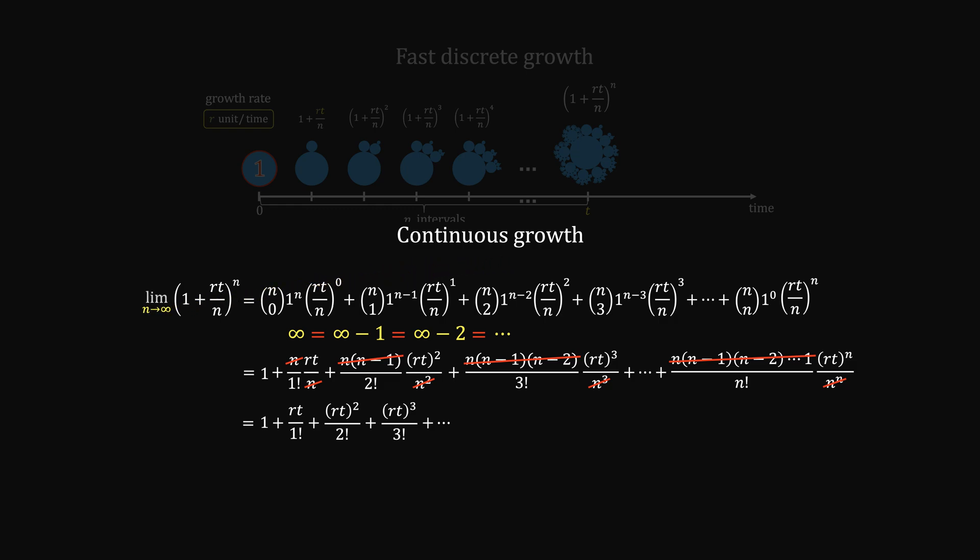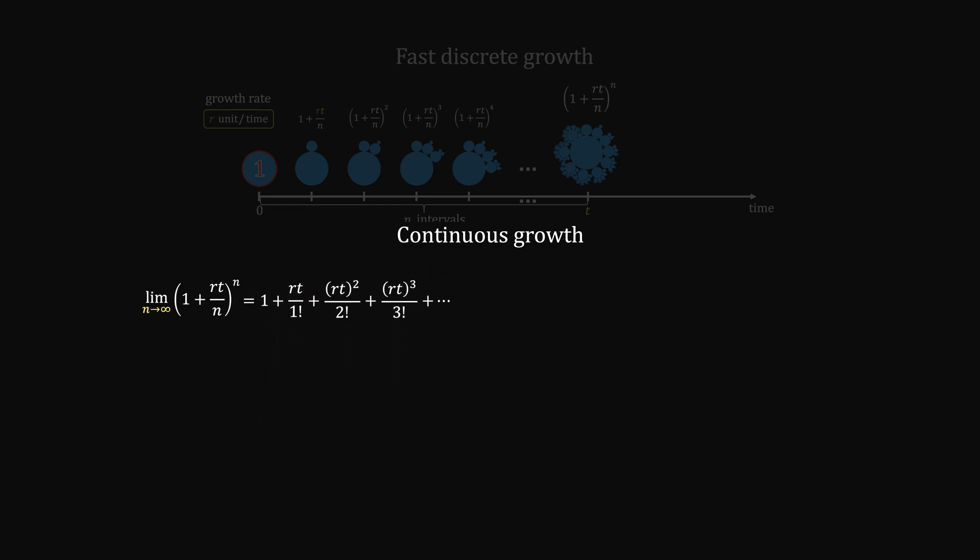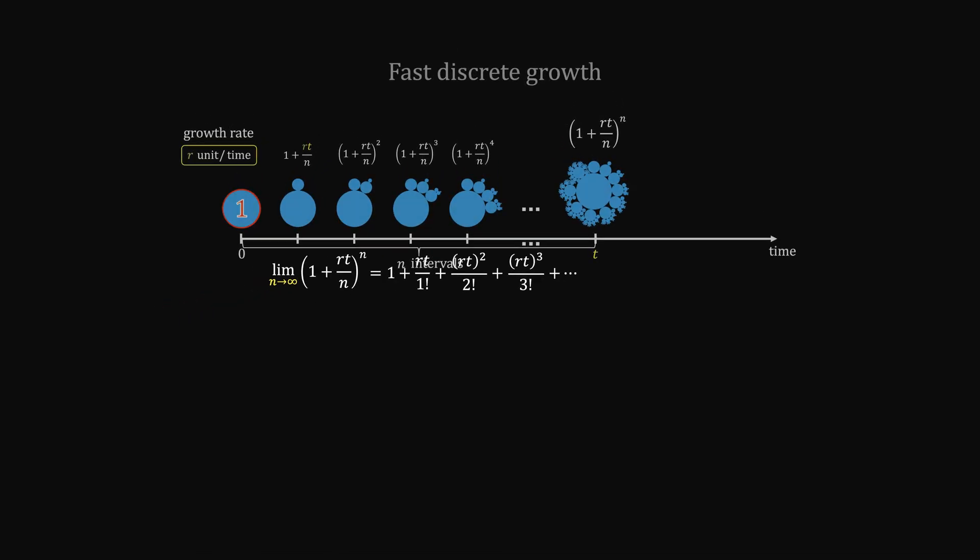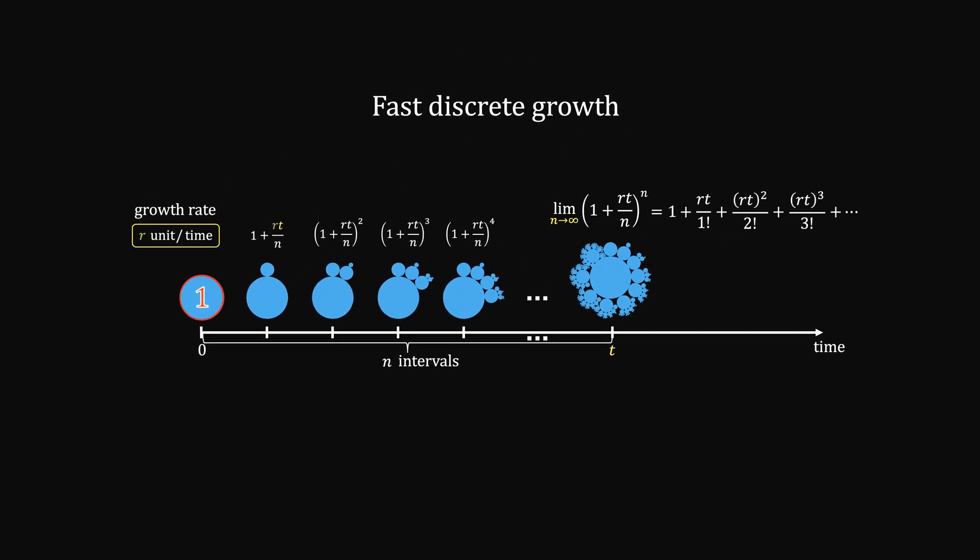This happens only when n goes to infinity. So we say the limit of this fast discrete growth is the continuous growth.